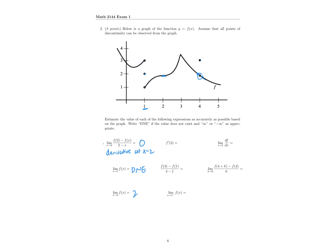Alright, next we have f prime of 3. What's the derivative of the function when x equals 3? Well, at x equals 3 we're at the very top of this corner — we have a cusp, there's a sharp edge, and we know that a function with a sharp edge is not going to be differentiable. So this derivative does not exist because of that cusp.